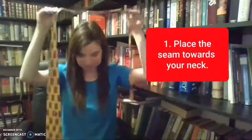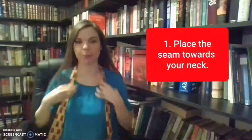First thing you want to do is take your tie and put the seam towards your neck. If you have a collared shirt, you obviously want to lift your collar up so that it's flat up against the back of the shirt.